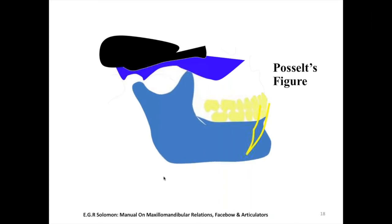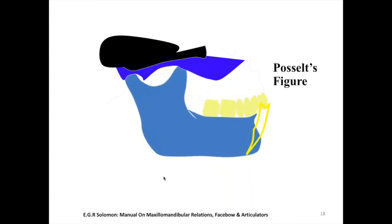When we combine the border movements of all three planes, we get a three-dimensional space within which mandibular movement is possible. This is called the envelope of motion, described by Posselt in 1952. The envelope of motion is longest and widest superiorly and narrows down to a point near the maximum mouth opening position.